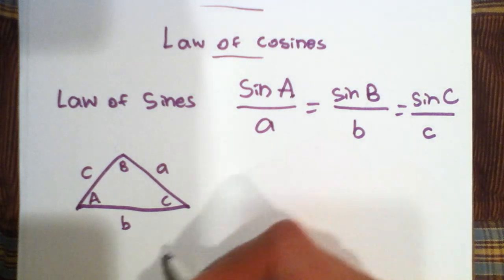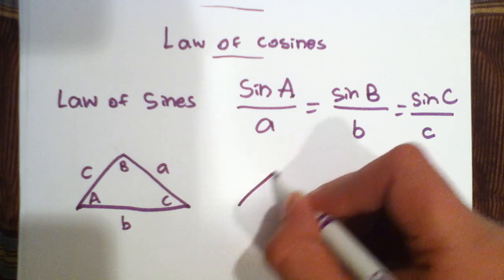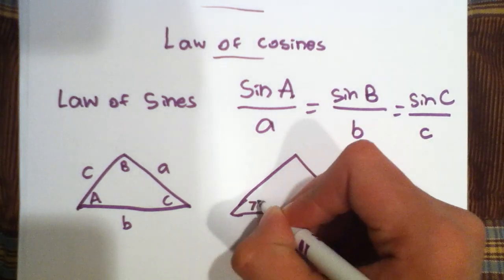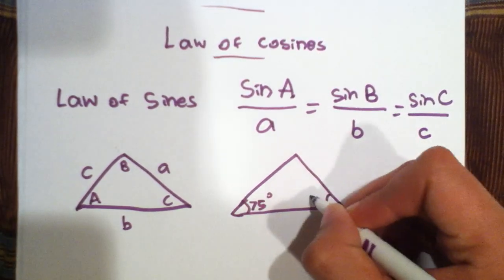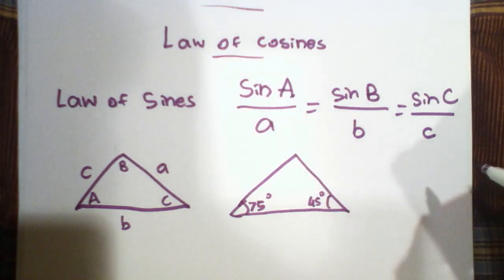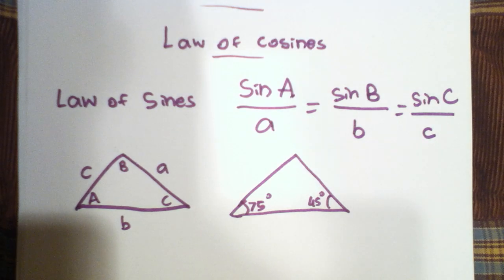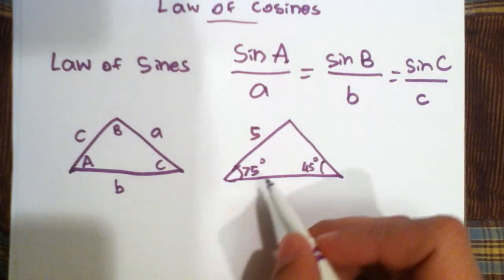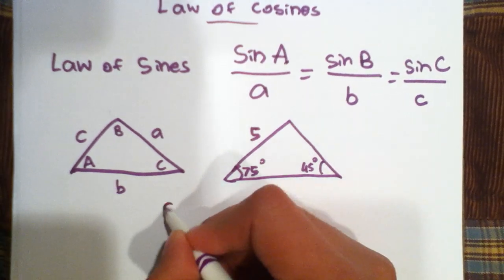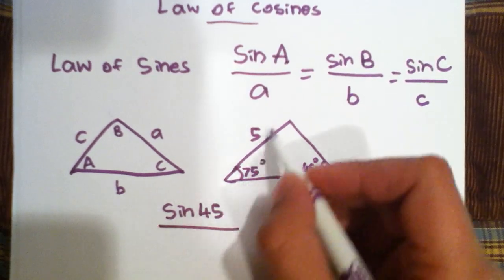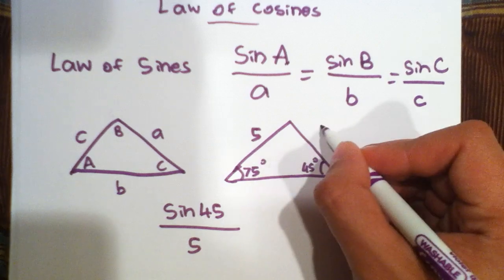Let's start with an example. Say we have a triangle with two angles that have been given: seventy-five degrees and forty-five degrees. And one side is given, and that side is five. We would start out by writing sine forty-five over the opposite side, five. And we want to find this side.